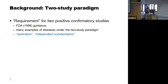This is what is required by the FDA. There is a guideline from 1998 that has been more recently updated, but essentially still talks about this two-study paradigm. There are many examples of diseases under this paradigm, which comes under the heading of replication, or independent substantiation.